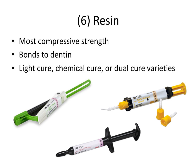RelyX Unicem is a self-adhesive cement, which means no additional bond or adhesive is required. But the bond strength to tooth structure it offers is not as strong as its counterpart, RelyX Ultimate. RelyX Ultimate is an adhesive resin cement used in combination with an adhesive like Scotch Bond or OptiBond to achieve bond strengths that exceed those of RelyX Unicem.